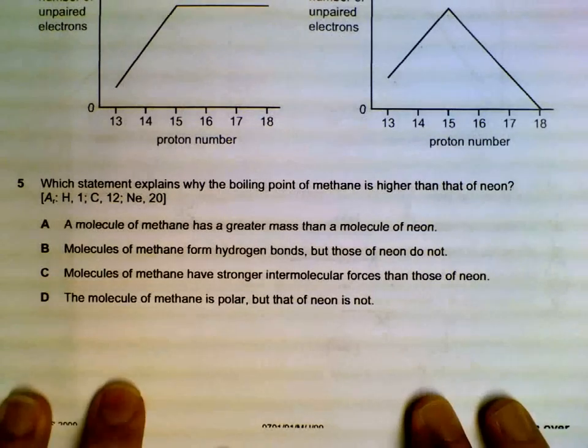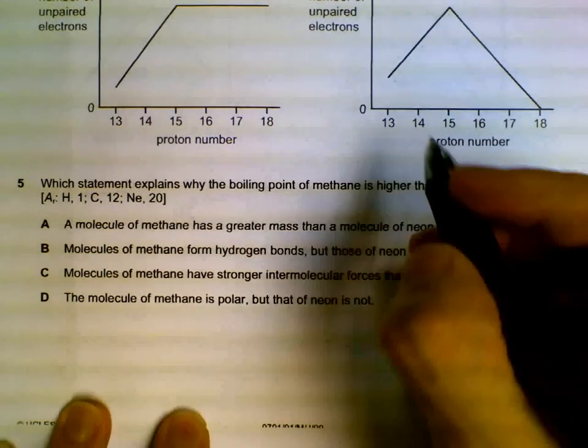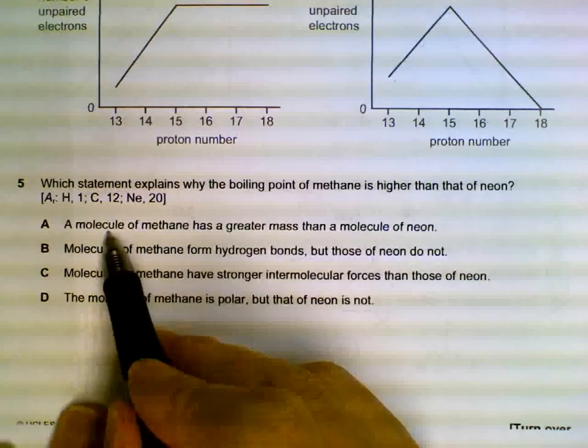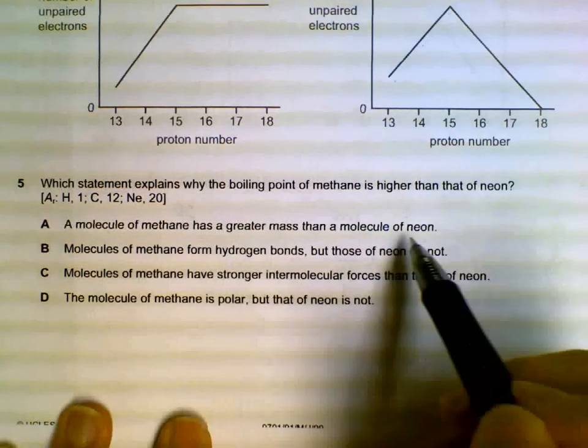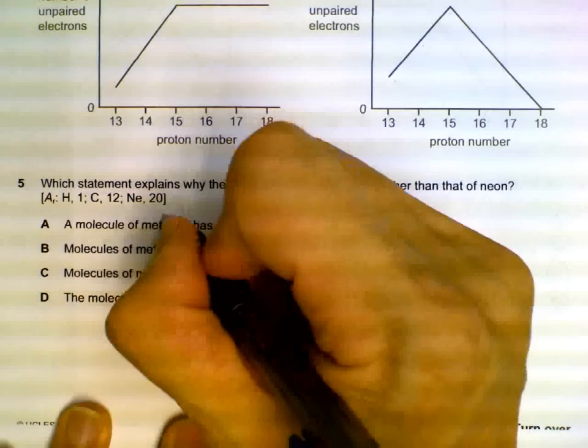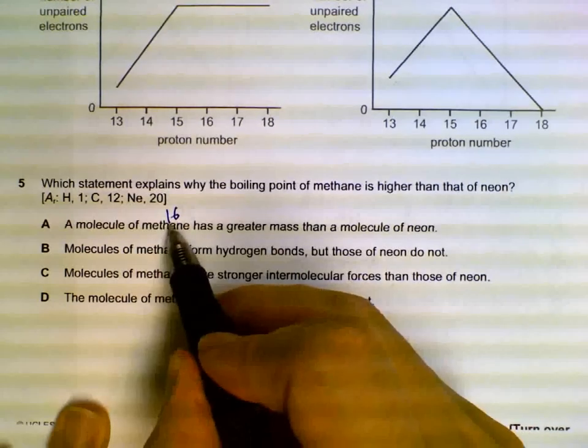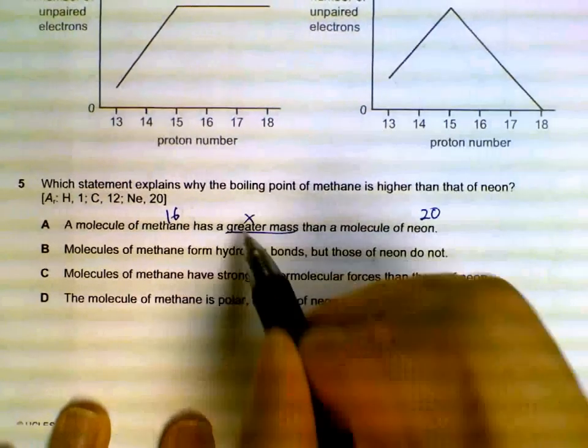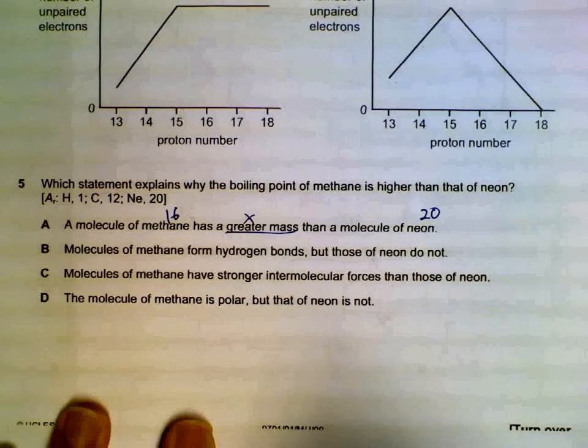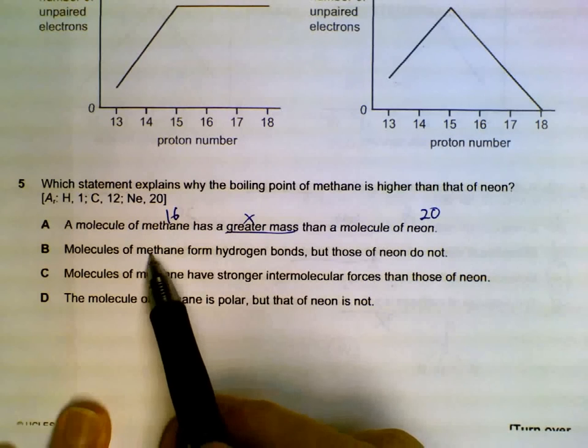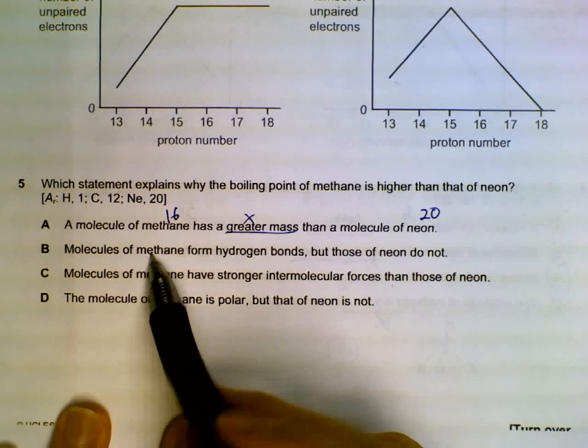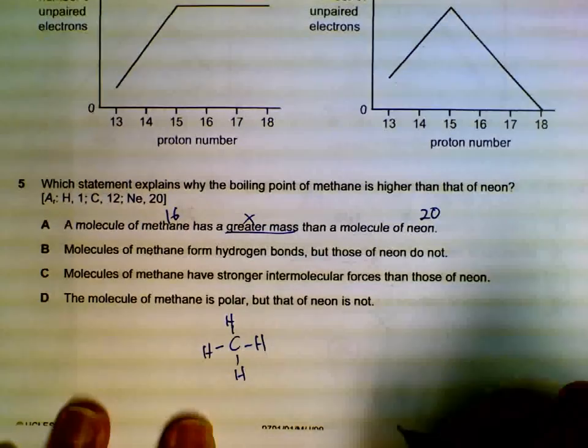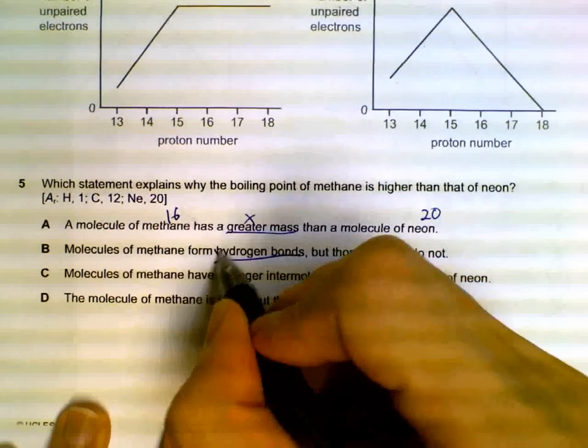Which statement shows why the boiling point of methane is higher than neon? We can do it by elimination. Molecule of methane has greater mass than neon? Methane is 16 (C plus 4H), neon is 20, so this is not true - methane has a smaller mass. Molecules of methane form hydrogen bonds? Methane does not have hydrogen bonds, it's a non-polar molecule, so this is also not correct.